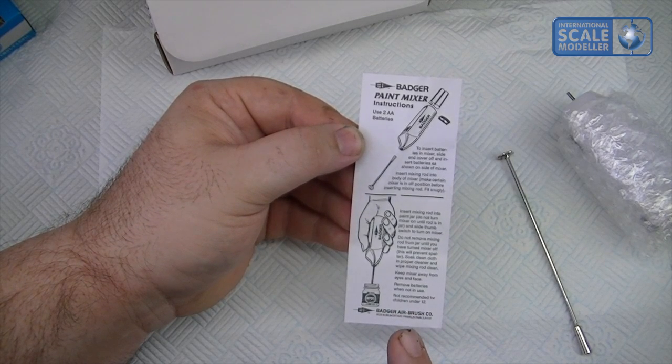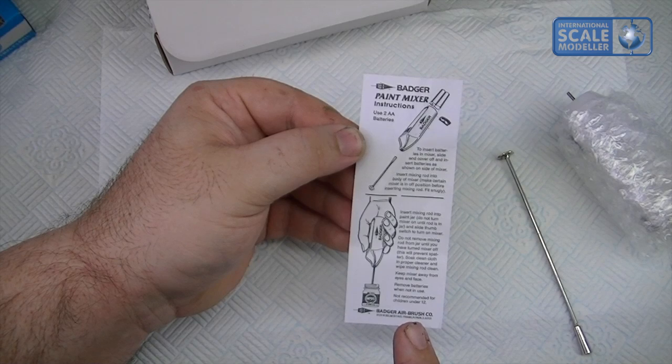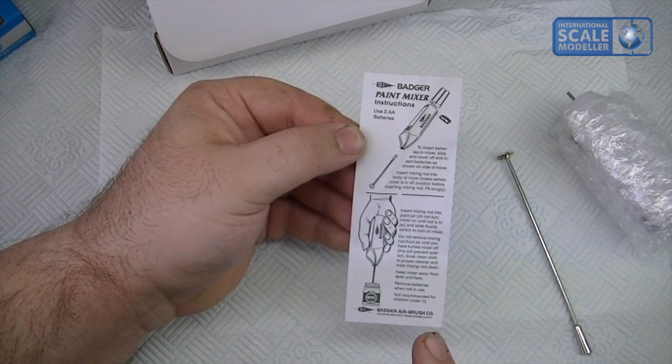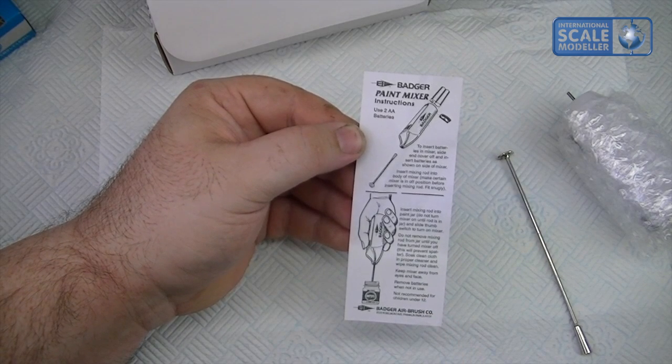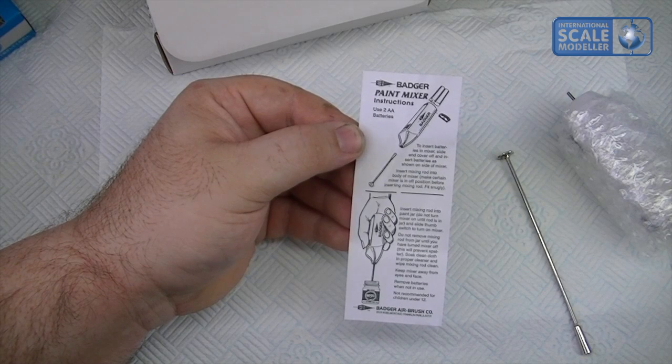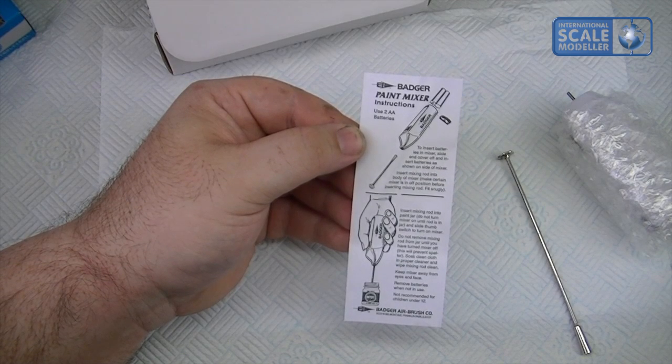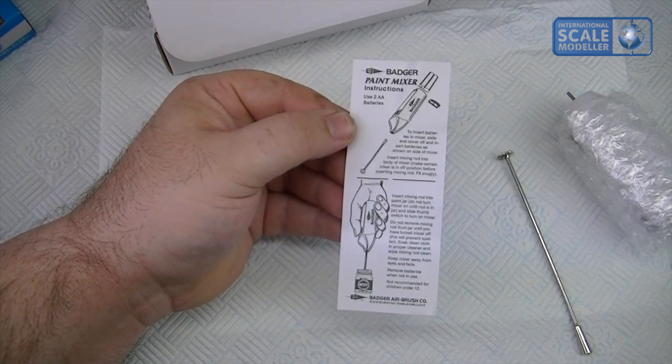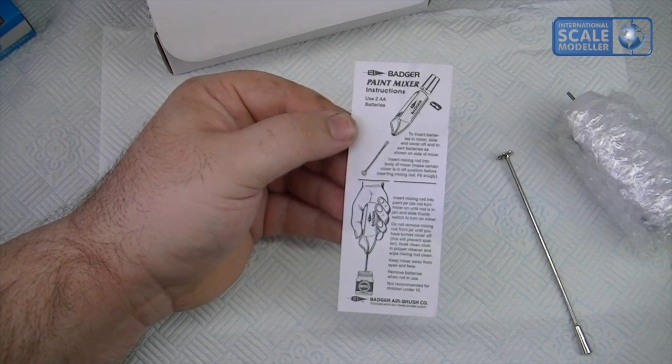Insert mixing rod into a jar of paint, do not turn it on until the rod is in the jar, that's fairly obvious, and slide the thumb switch to turn on the mixer. Do not remove mixing rod from the jar until you've turned the mixer off, this prevents splatter. Soak clean cloth in proper cleaner and wipe mixing rod clean. Keep mixer away from the face, remove batteries when not in use, not recommended for children under 12.